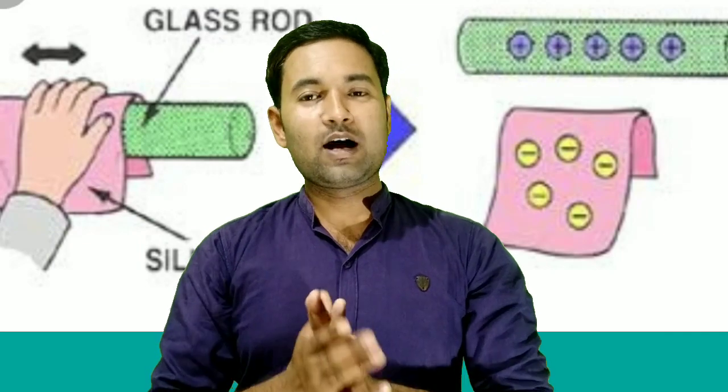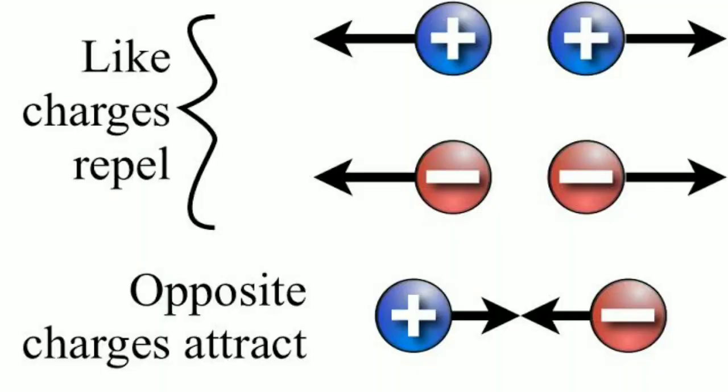So we know two charges. When two positive charges are brought near each other, they repel. Two negative charges also repel each other. And unlike charges — one positive and one negative — attract each other.